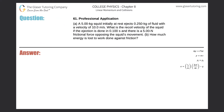Professional application letter, problem 61. A 5-kilogram squid initially at rest ejects 0.25 kilograms of fluid with a velocity of 10 meters per second. What is the recoil velocity of the squid if the ejection is done in 0.1 seconds and there is a 5-newton frictional force opposing the squid's movement? We'll solve this in two frames.